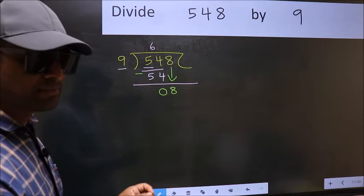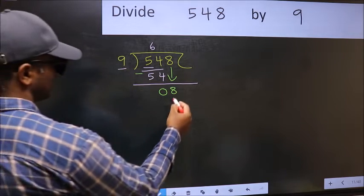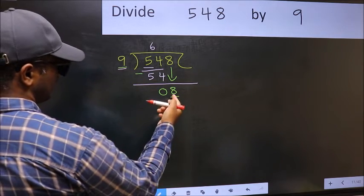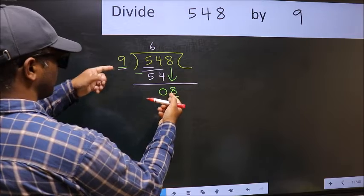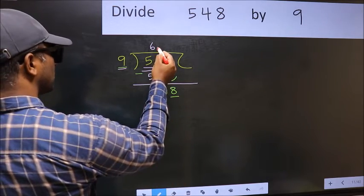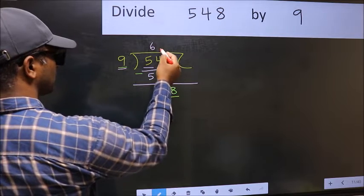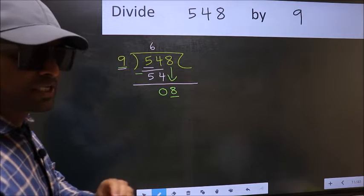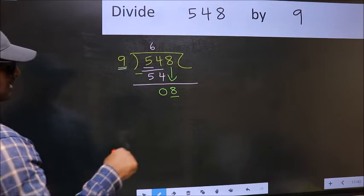And the mistake is this: here we have 8 and here 9. 8 is smaller than 9, so what many do is they directly put dot and take zero, which is wrong.